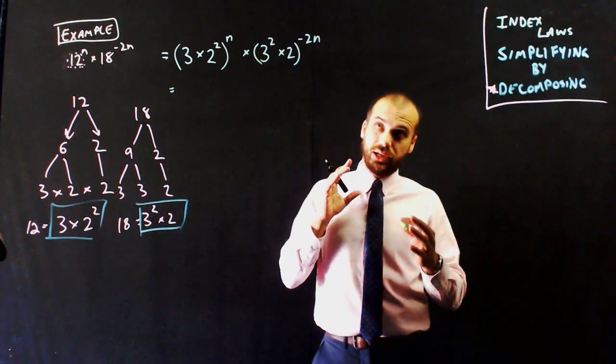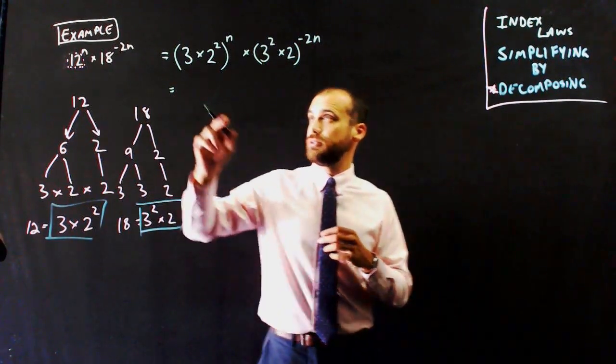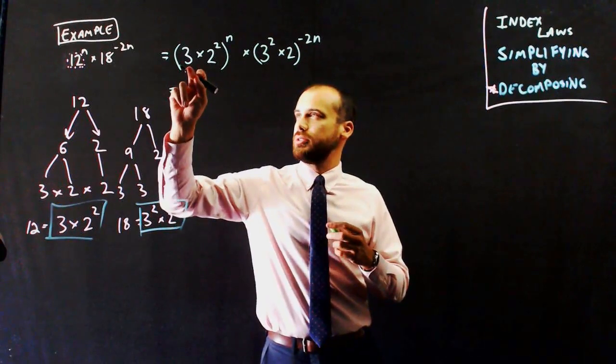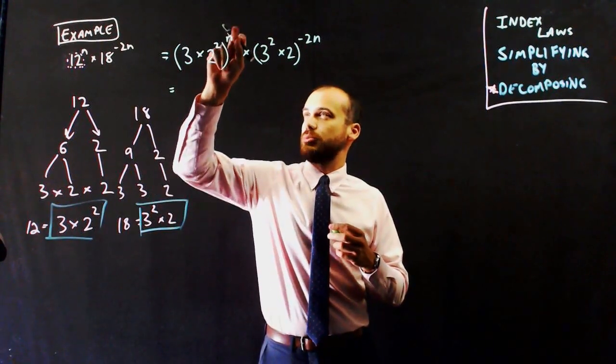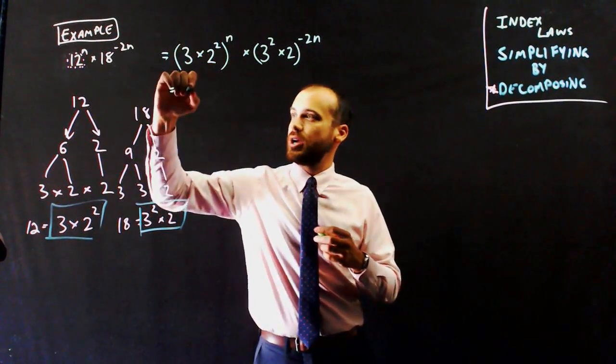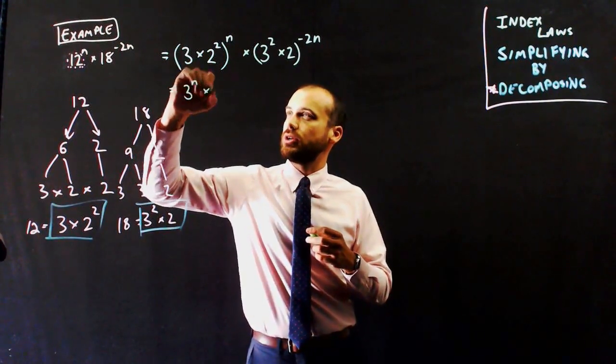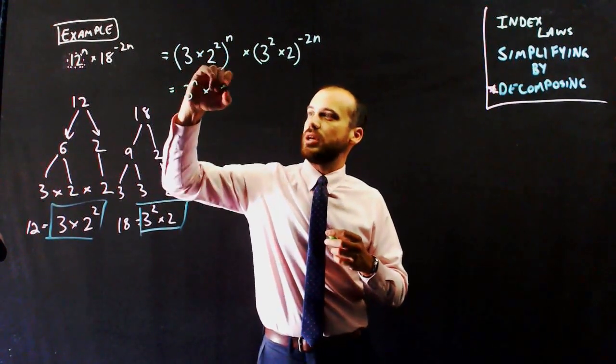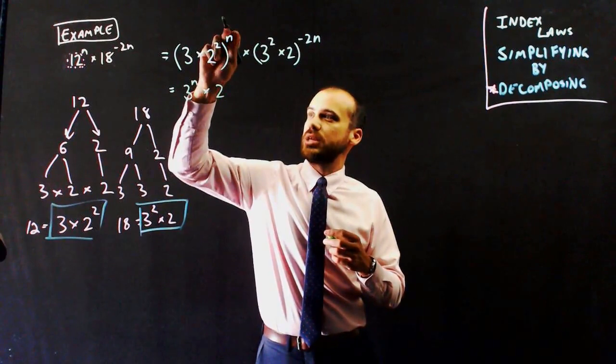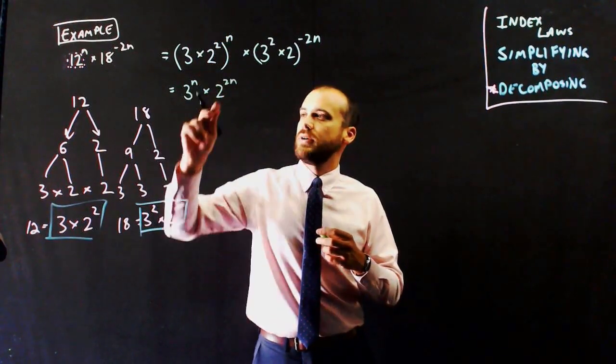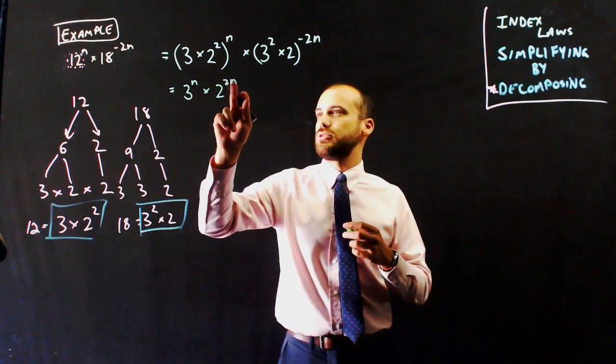Now, using my fourth index law, maybe it's my third index law... 3 times 2 to the power of 2 to the power of n, I can say 3 to the power of n times 2 to the 2 to the n. So that's 2 times n, which is 2n. So now 3 to the n times 2 to the 2n.